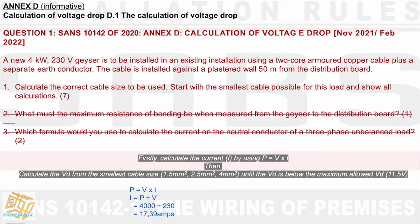Going back to question 1: firstly, calculate the current I by using P = VI. We manipulate the formula — I = P ÷ V. We have 4kW divided by 230 volts, which gives us 17.39 amps.